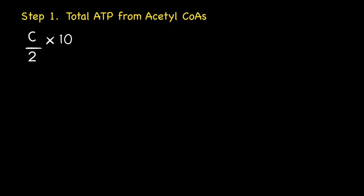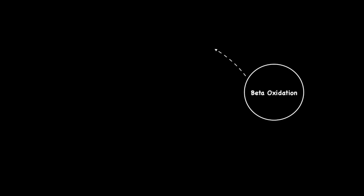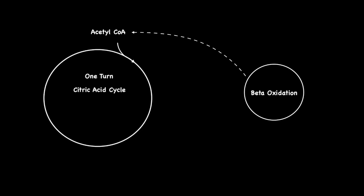Where C over 2 gives the total number of acetyl-CoAs produced from the complete beta-oxidation of the fatty acid. Please refer to my video titled beta-oxidation part 1 for an explanation of why this is so. While the number 10 represents the number of ATPs produced per acetyl-CoA. Recall how for every acetyl-CoA produced during beta-oxidation that enters into the citric acid cycle causes the cycle to spin once. One turn of the citric acid cycle produces 1 NADH at step number 3, 1 NADH at step number 4, 1 GTP at step number 5, 1 FADH2 at step number 6, and finally 1 NADH at step number 8.